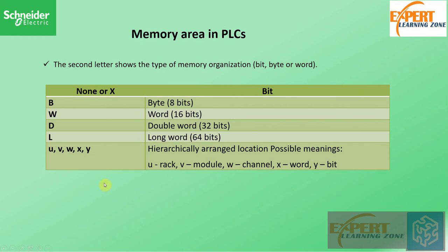There could also be a case where we are interested in accessing just a bit, in which case we use a hierarchical notation where variables are expressed as %U.V.W.X.Y.Z — where U is the rack number, V the module, W the channel number, X the word, and Y the bit. We will see how this is implemented in software, and it may change slightly depending on the implementation or configuration.